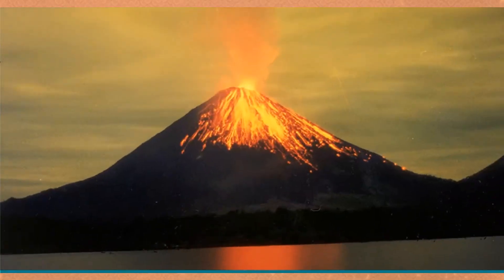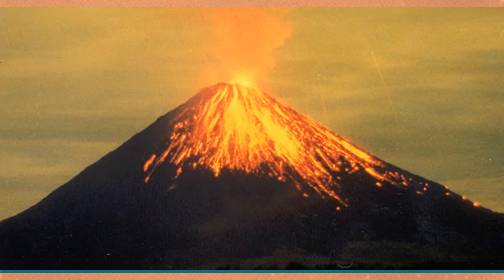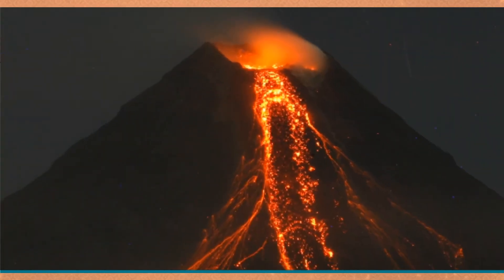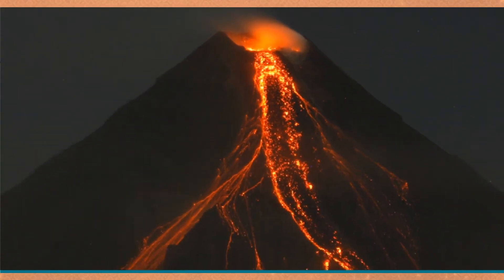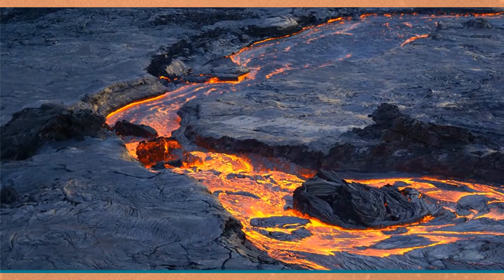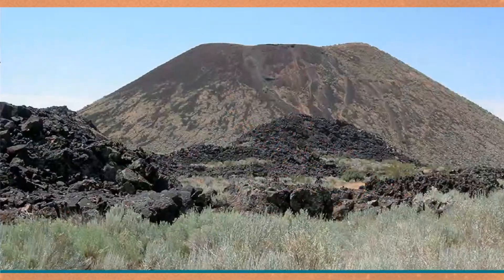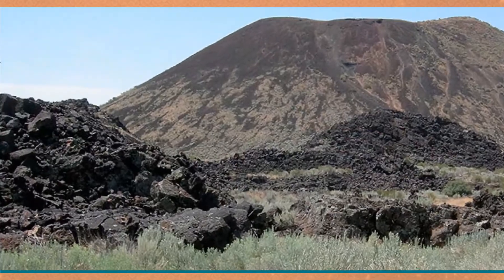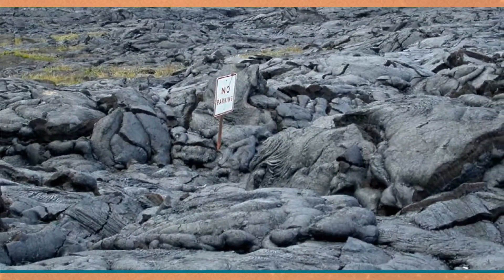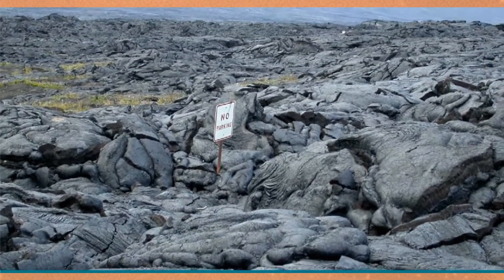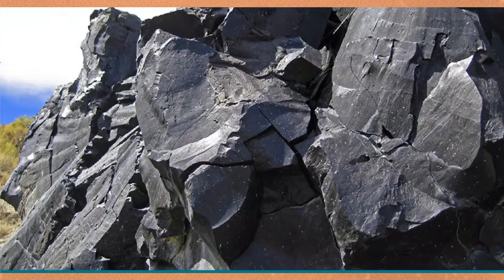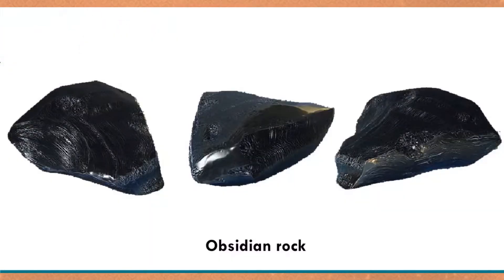Other rocks are formed when the magma erupts from a volcano or reaches the earth's surface. Magma is called lava when it reaches the earth's surface. The lava cools quickly and forms extrusive igneous rocks. Basalt is an example of this type of rock. Obsidian is another extrusive igneous rock that cools very fast and looks like shiny black glass.